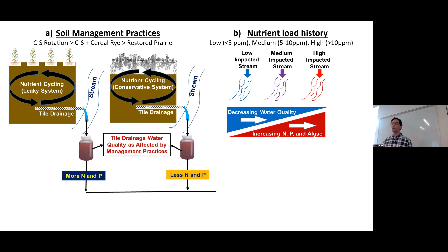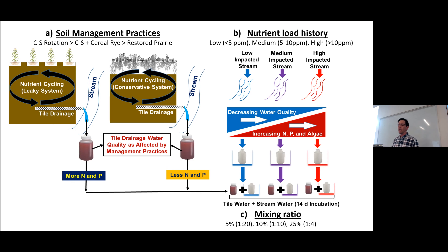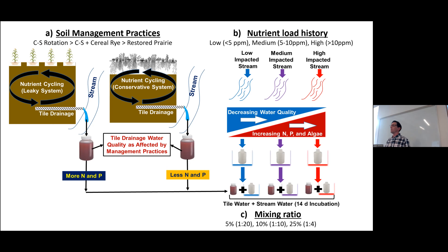Our objectives were to compare the impact of tile water under different conservation practices versus business-as-usual management, and how that affects stream water eutrophication. It's difficult to set up an experiment like this because you'd have to change the entire catchment or watershed land use to create experimental units — so this was kind of our ambitious question.